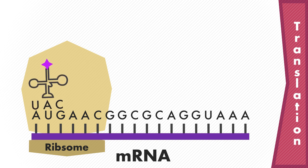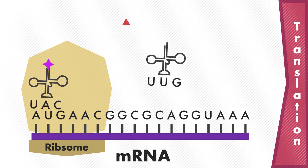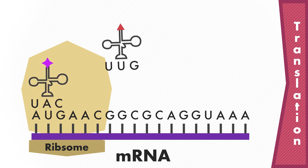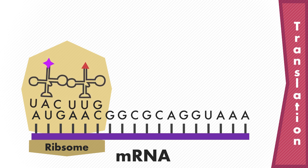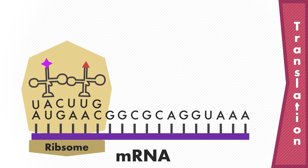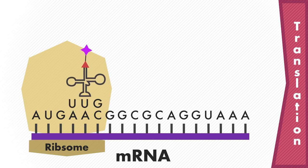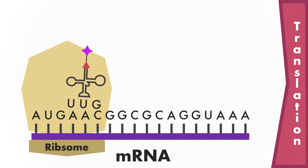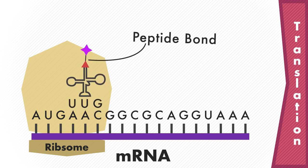Anticodon bases pair with the codon in order to bring the specific amino acid to the correct place. A second transfer RNA molecule picks up another activated amino acid and brings it to the ribosome, matching anticodon to codon. The first tRNA releases its amino acid to the second transfer RNA and leaves the site. Amino acids link up, forming peptide bonds using ATP as the energy source.